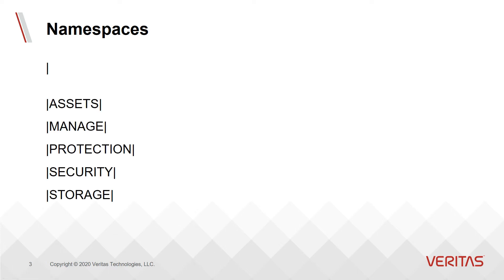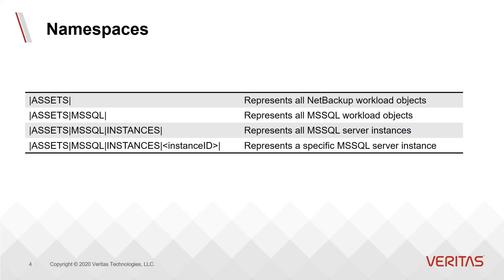And just like a file system, there is a root directory which is shown as just a single pipe. Below that are five main top-level namespace segments. All NetBackup objects are categorized under these top-level directories. Here's an example namespace hierarchy.